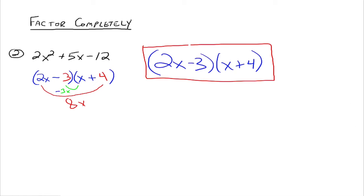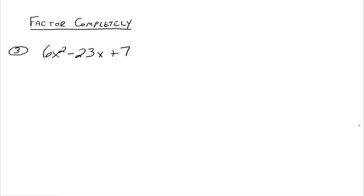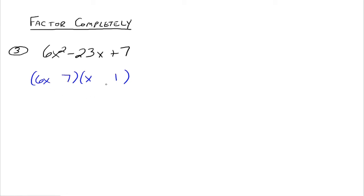Let's do another one: 6x squared minus 23x plus 7. If this is going to factor, what gives us 6x squared? Well, x and 6x, or 2x and 3x. If you put in 6x and x with 1 and 7: 6x times 7 gives 42x and x — there's no way that goes down to 23. And even switching to 7 and 1: 6x times 1 is 6x and 7x — 6x and 7x won't give us 23 either.